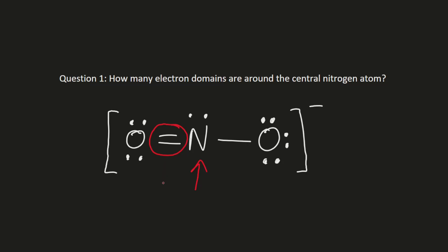And to the right, you can see that there is one single electron bond, which also counts as one electron domain. And at the very top of the central atom nitrogen, you can see that there is an unbonded pair of electrons, which again counts as another electron domain, giving a total of three electron domains for NO2-.